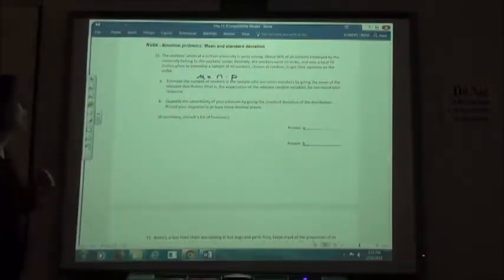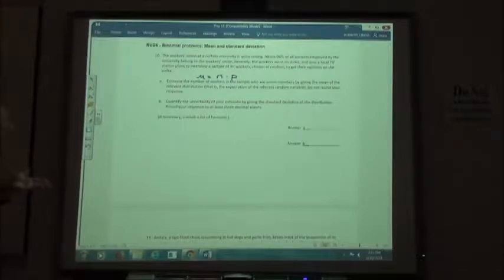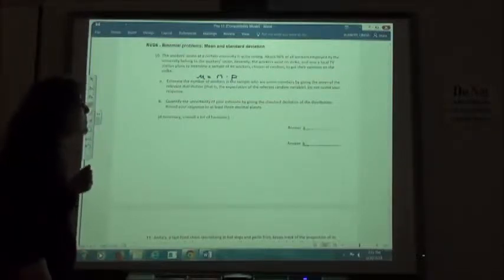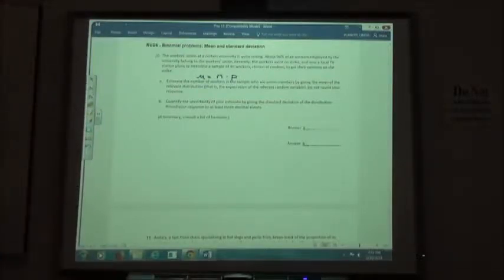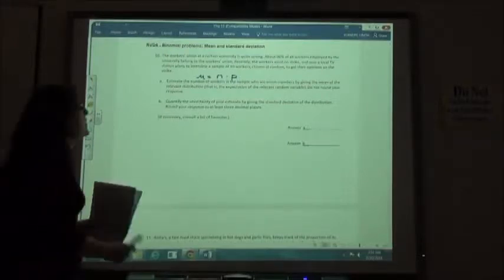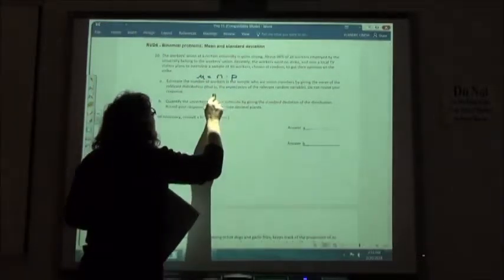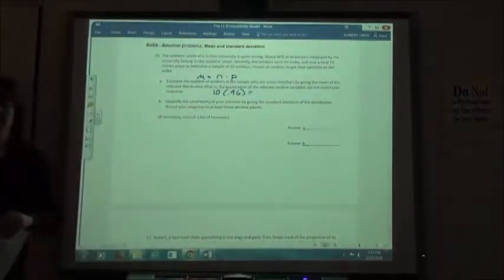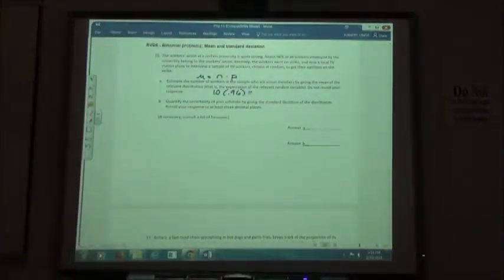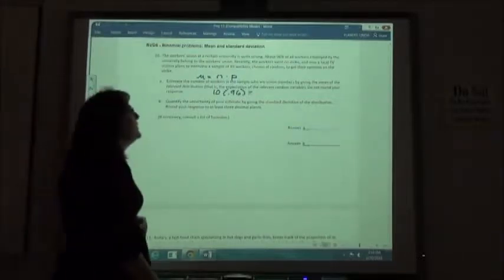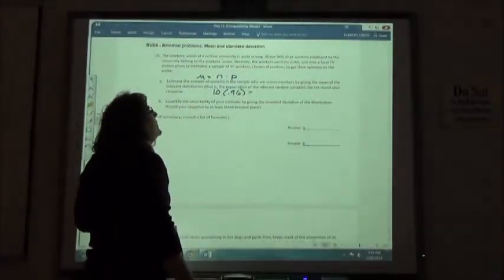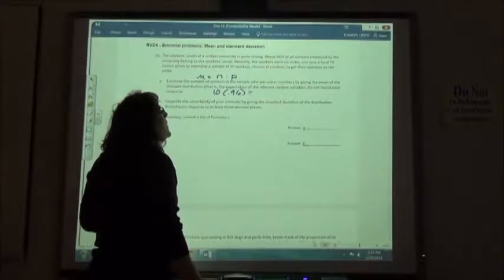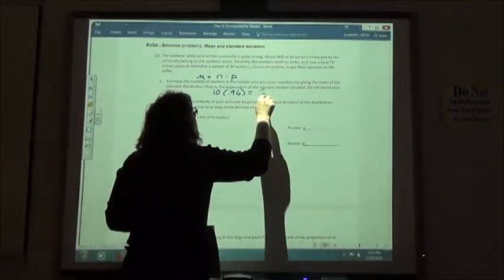Estimate the number of workers in the sample who are union members by giving the mean of the relevant distribution, that is the expectation of the relevant random variable. Do not round your response. Well, all we're going to do here is take 10 times our 96%, and so we're going to get 9.6.